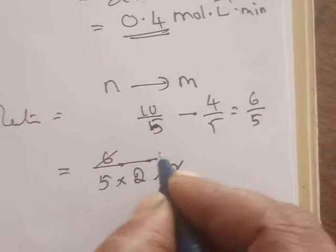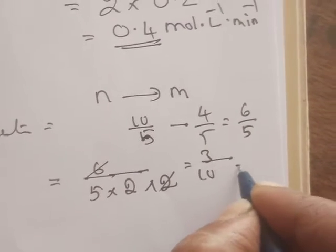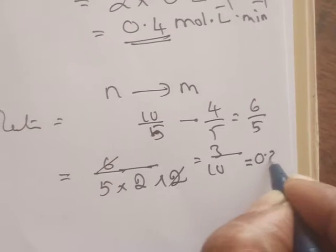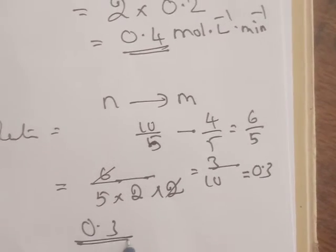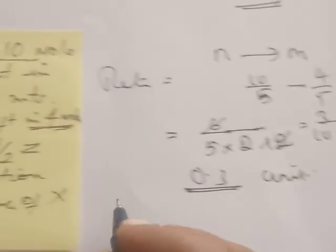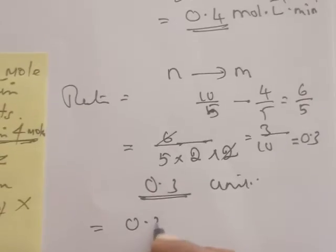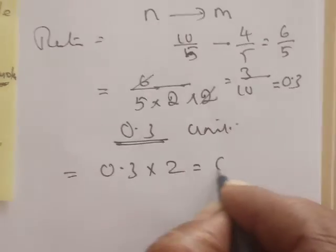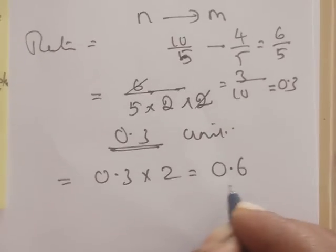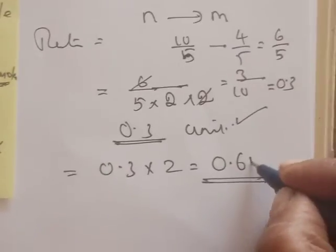After cancellation, you get 3 by 5 divided by 2, which gives 0.3. So 0.3 is the rate of reaction. For the rate of disappearance, as stated before, it is the stoichiometry coefficient multiplied by the rate of reaction: 0.3 into 2, which equals 0.6. So the rate of reaction is 0.3 and the rate of disappearance is 0.6.